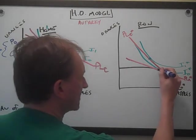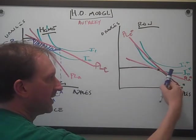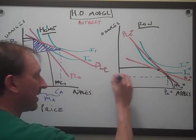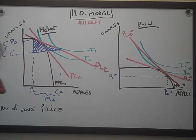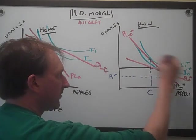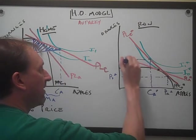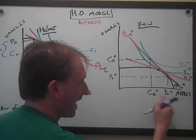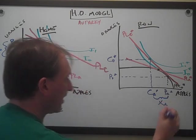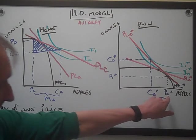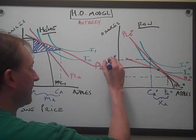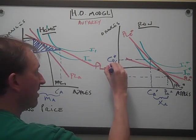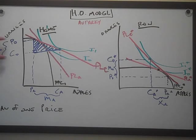The same thing is going on for ROW. These guys no longer operate at the autarky point; they slide out to where PLT star is tangent to their production possibility curve. They're now making production of apple star — that many apples — and production of orange star — that many oranges. Meanwhile, the indifference curve shows they're consuming that many apples and that many oranges (CO star). If they're making that many apples and only consuming that many, they're exporting the rest. And if they're consuming more oranges than they're making, that's their import of oranges, which should equal home's export of oranges.